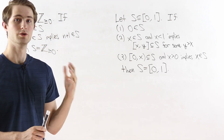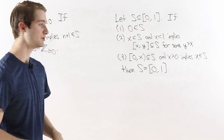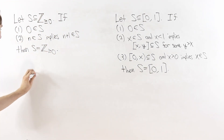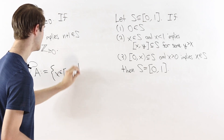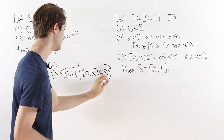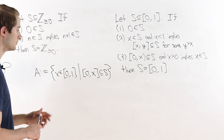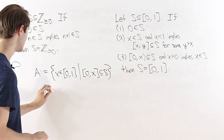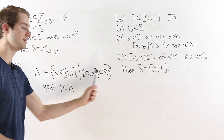Now we are going to prove real induction — that if some subset of the closed interval from zero to one satisfies these three conditions then it must be the entire interval. To do that proof we're going to define a new set, which we'll call A, defined as the points x in the closed interval from zero to one such that the entire interval [0, x] is contained in S. Our goal is to prove that S equals the entire closed interval from zero to one, and equivalently to prove that one is an element of A, because by definition that means [0, 1] is contained in S.